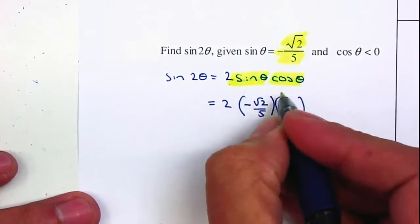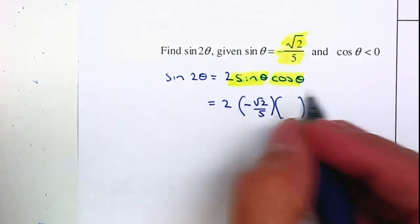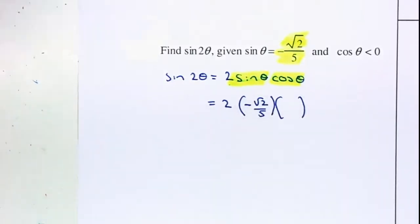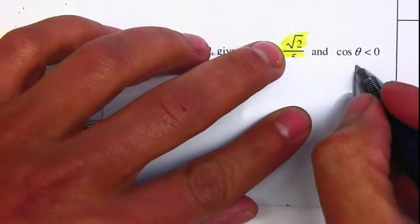And now the only thing that I need to find is the cosine of θ. So therefore, I'm going to use my x and y-axis and build a triangle to find my missing length.